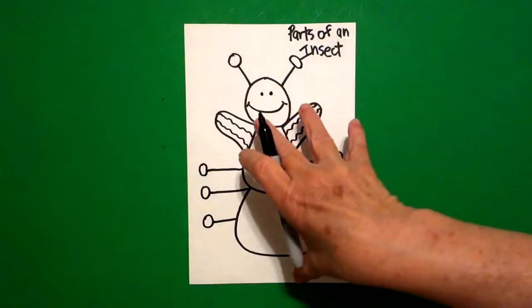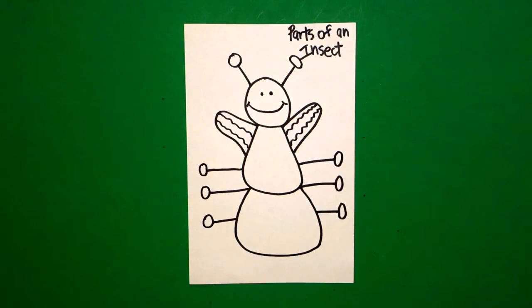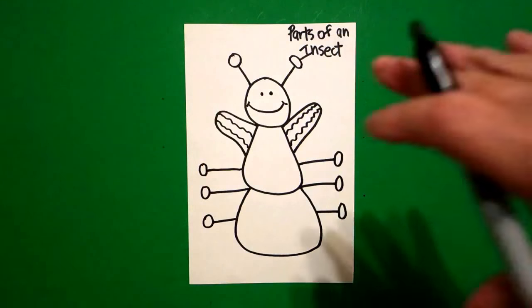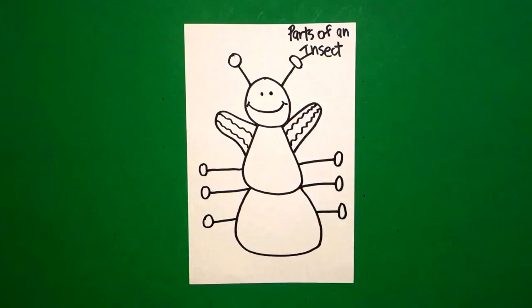We are looking down on the insect. It's an aerial view as if we were flying and then we see it. Now we're going to label the parts.